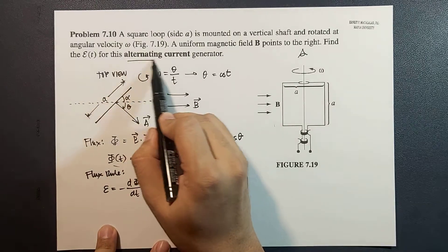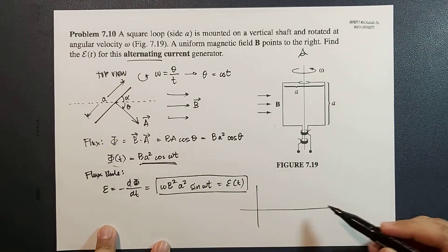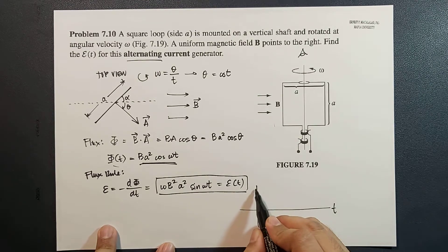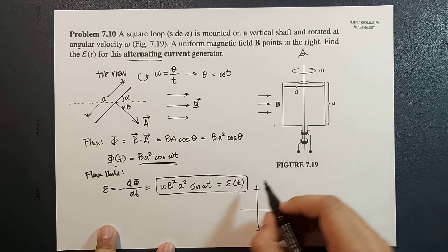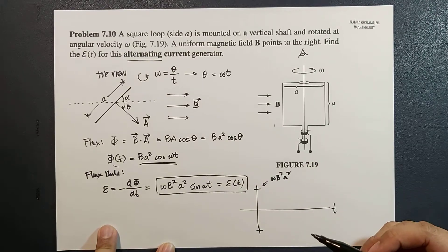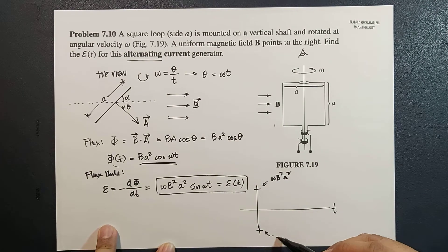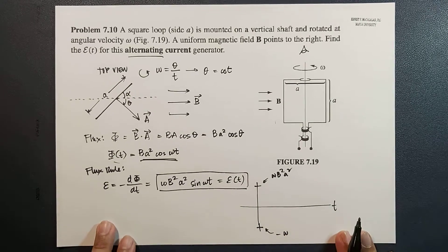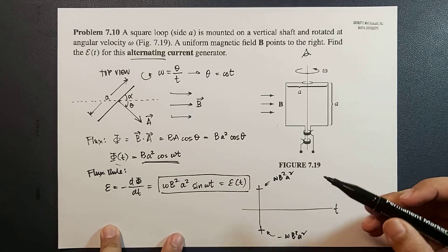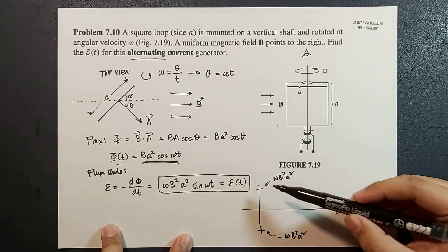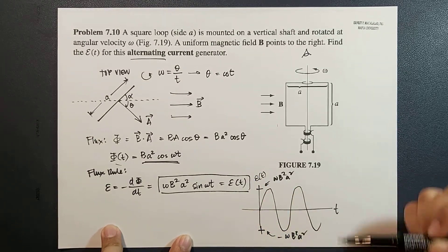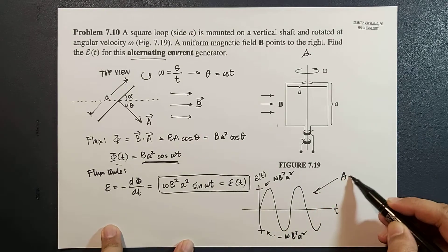So if you're going to graph the EMF as a function of time, this maximum value would be equal to omega B a squared, and this is negative omega B a squared. And this function will now be E as a function of time, so this function will now be alternating current.